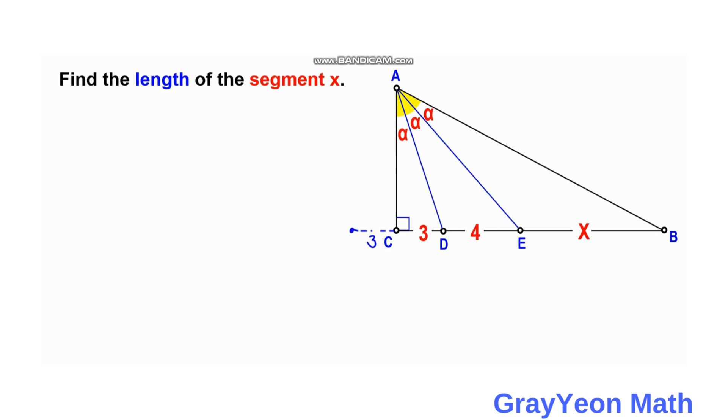Since we copied this three unit segment to the left, the resulting segment from A to this point, let's say that this is F, so it will be the same. This length will be the same as this length, and this will be a right angle.